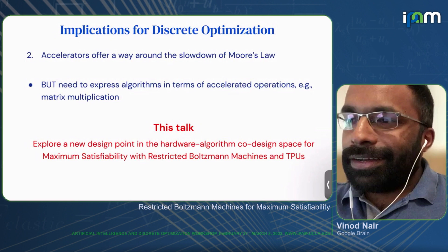In this talk, I'm going to discuss something that fits into this second implication — a new design point in the space of hardware and algorithms, where there is a particularly good fit between the algorithm and the hardware on which it runs. That combination is given by using restricted Boltzmann machines on TPUs to solve maximum satisfiability problems.